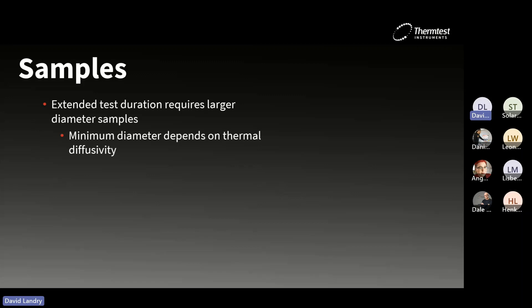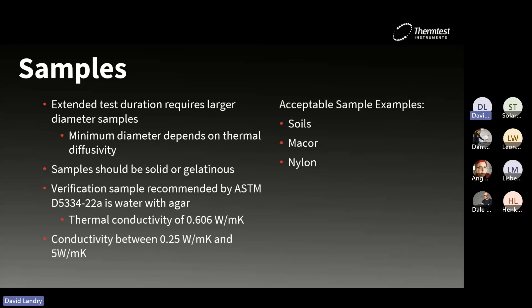Samples suitable for testing with this method are soils and rocks, ceramics like MACOR and similar things, and polymers like nylon, which will be on the lower end of the conductivity range. The conductivity range it can measure is from 0.25 watts per meter Kelvin all the way up to 5 watts per meter Kelvin. Nylon is on the lower end at around 0.3, while some rock types or ceramics can reach the higher end of that range.